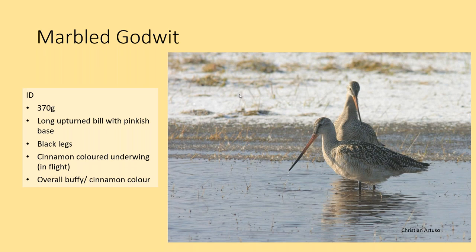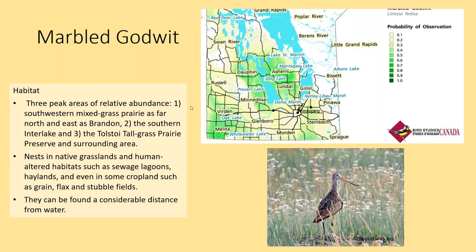The Marbled Godwit is another shorebird associated with wetlands and water, but often nesting in grassland areas. At 370 grams it is larger than the Upland Sandpiper. It can be identified by its long upturned bill with a pinkish base and dark tip, black legs, cinnamon-colored underwing feathers, and overall buffy cinnamon coloring. You can find Marbled Godwits across southern Manitoba — in the southwest, the southern interlake, and the southeast. They nest in native grasslands and human-altered landscapes such as sewage lagoons, haylands, and some croplands, and can be found a considerable distance from water.